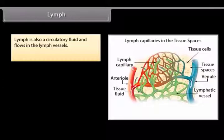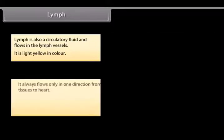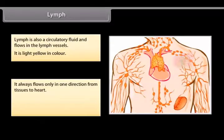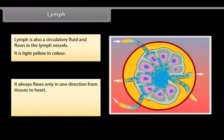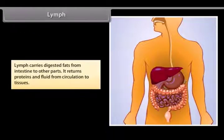Lymph. Lymph is also a circulatory fluid and flows in the lymph vessels. It is light yellow in color. It always flows only in one direction from tissues to heart. Cells called lymphocytes present in lymph eat up germs and prevent body from infections. Lymph carries digested fats from intestine to other parts. It returns proteins and fluid from circulation to tissues.